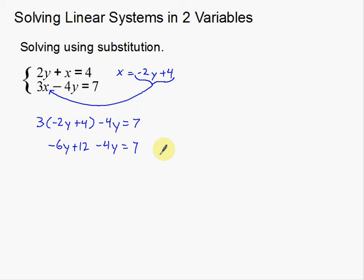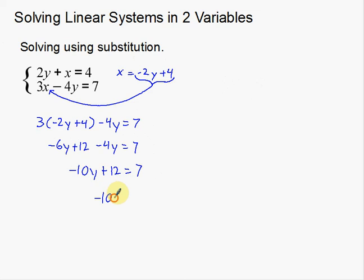Now I'll combine like terms. Negative 6 and negative 4 gives negative 10y, so negative 10y plus 12 equals 7. I need to subtract 12 to the other side: negative 10y equals 7 minus 12, which is negative 5. Then divide by negative 10 — that reduces to positive one-half, because a negative divided by a negative is positive. So y equals 1/2.